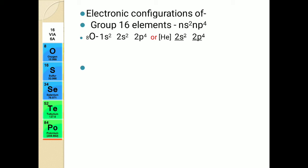There is one more way to write this electronic configuration called the condensed electronic configuration. It is the short form in which you write the noble gas located immediately before your element in square brackets, and then write the remaining electronic configuration after that. Helium has atomic number 2, so the first 2 electrons are covered by [He], and the remaining 6 electrons give the condensed formula: [He] 2s², 2p⁴.